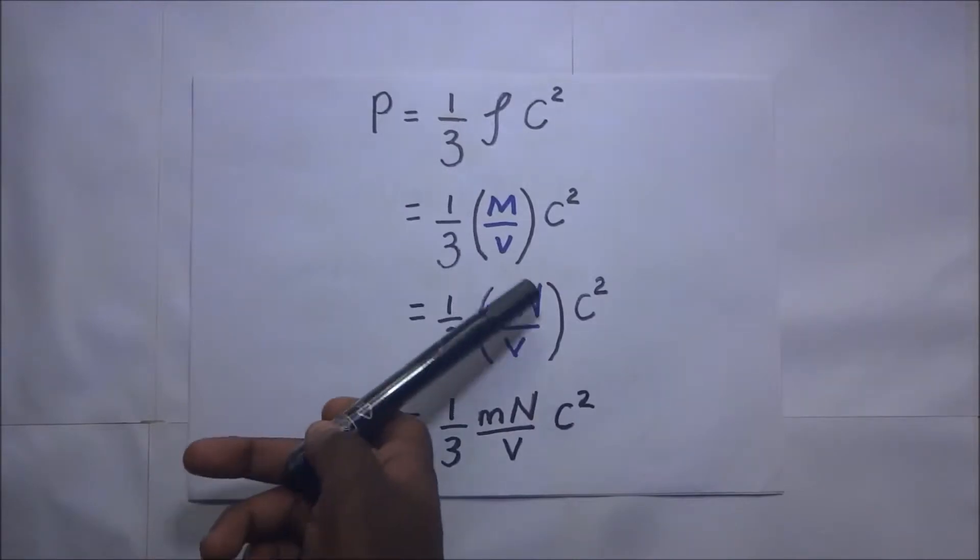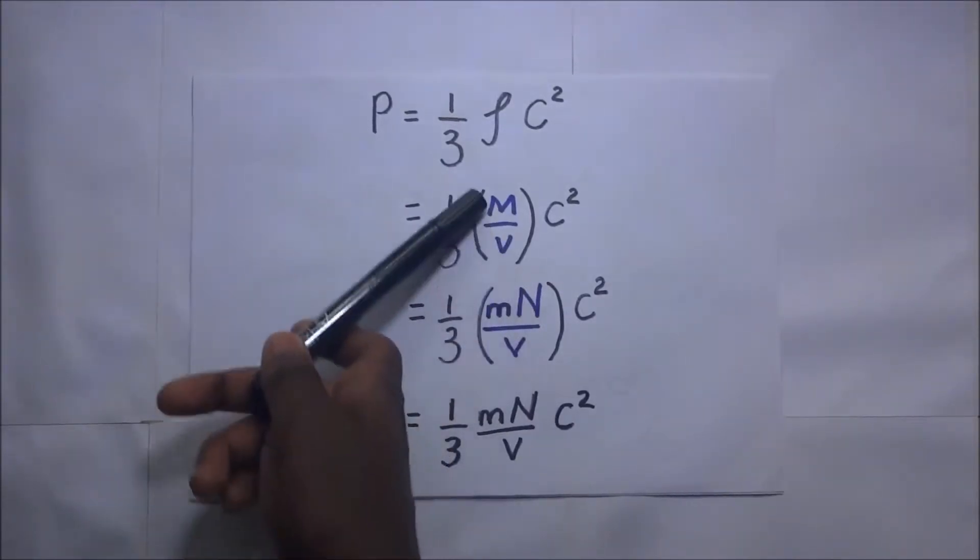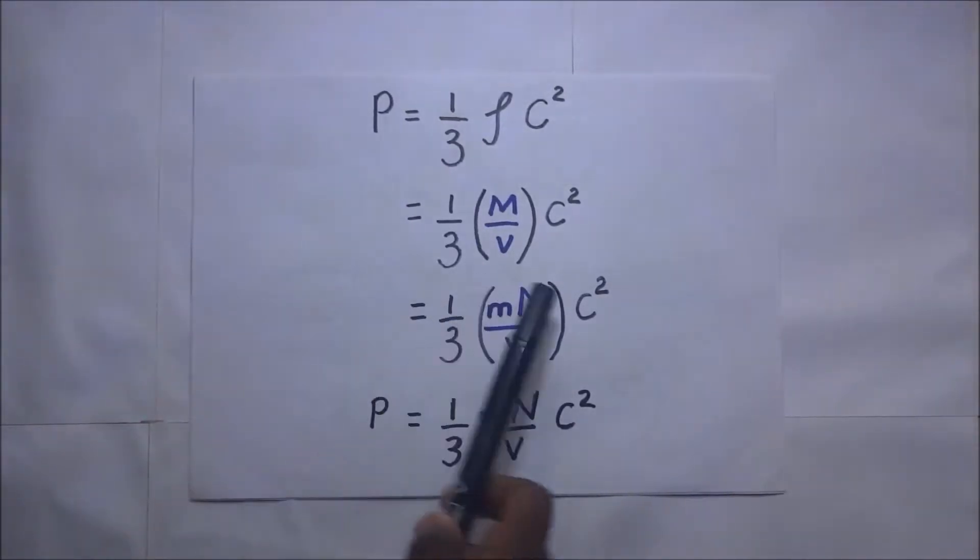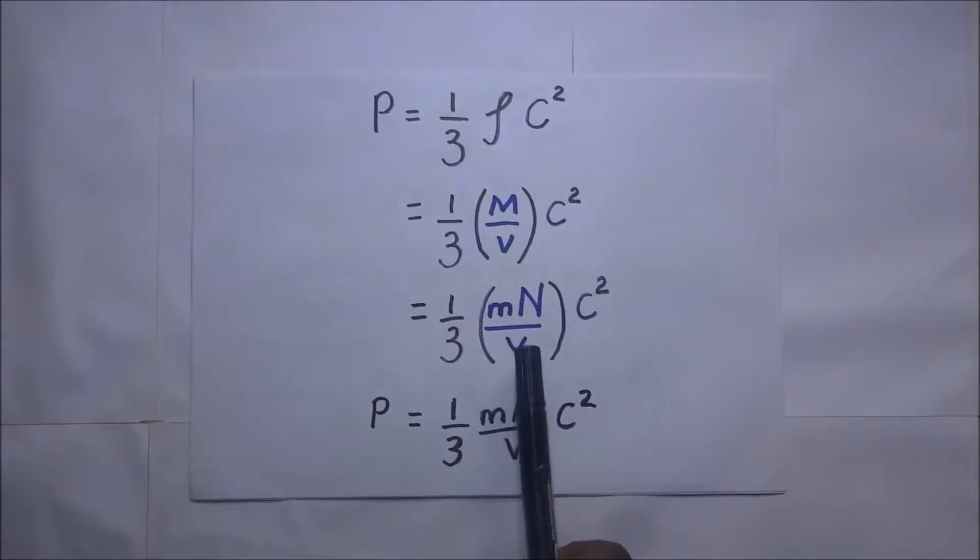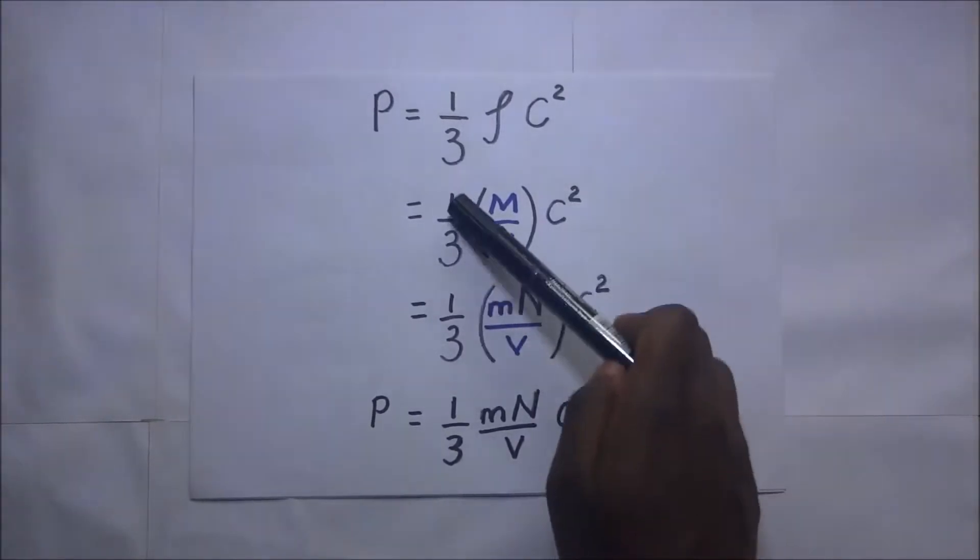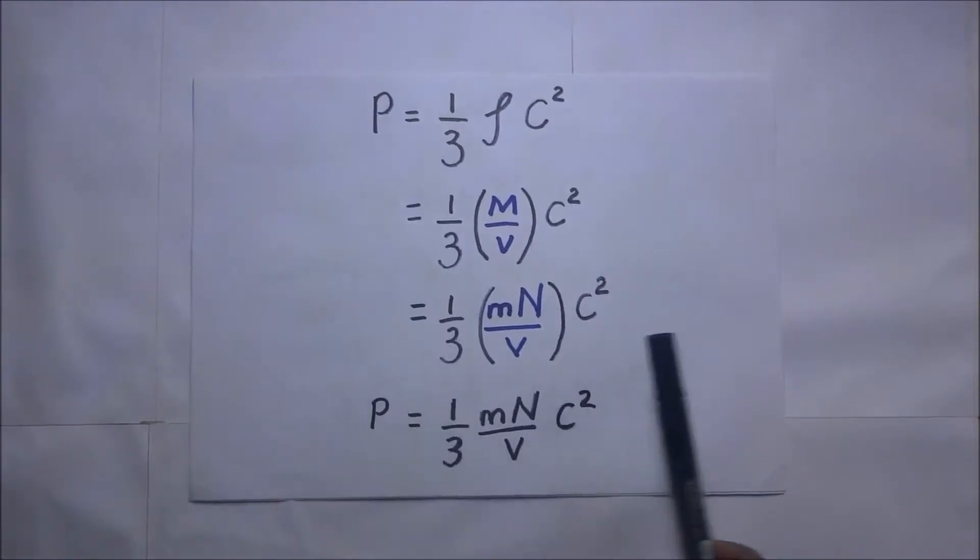So this explains the next step: capital M is going to be small m times N. Of course, the rest remains the same: divide that by the volume, then c squared, then one-third.